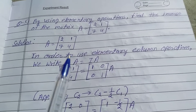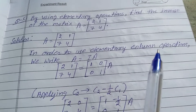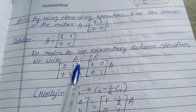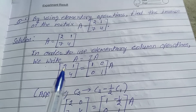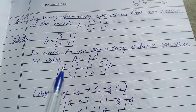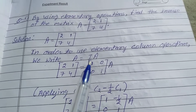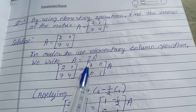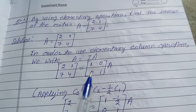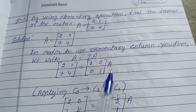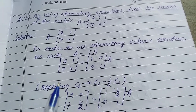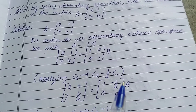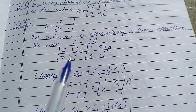In order to use elementary column operations, we write A equal to I times A. So first put the matrix [[2, 1], [7, 4]] equal to the 2×2 identity matrix [[1, 0], [0, 1]] times A. Now applying C2 tends to C2 minus 1/2 of C1.